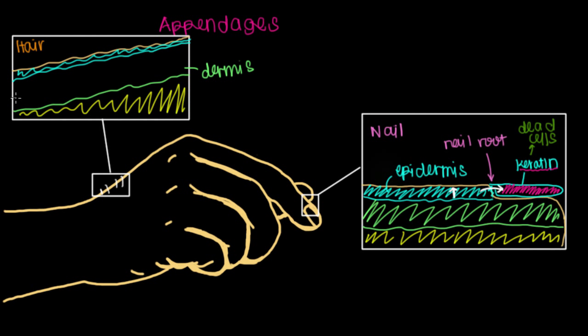And so the thing about the dermis to recall is that there are two main parts to it. There's the papillary dermis, which is the top layer of the dermis. And then there's the reticular layer. And if you recall the papillary layer is the thinner, looser connective tissue layer. And the reticular layer is the thicker, more dense or denser connective tissue layer.